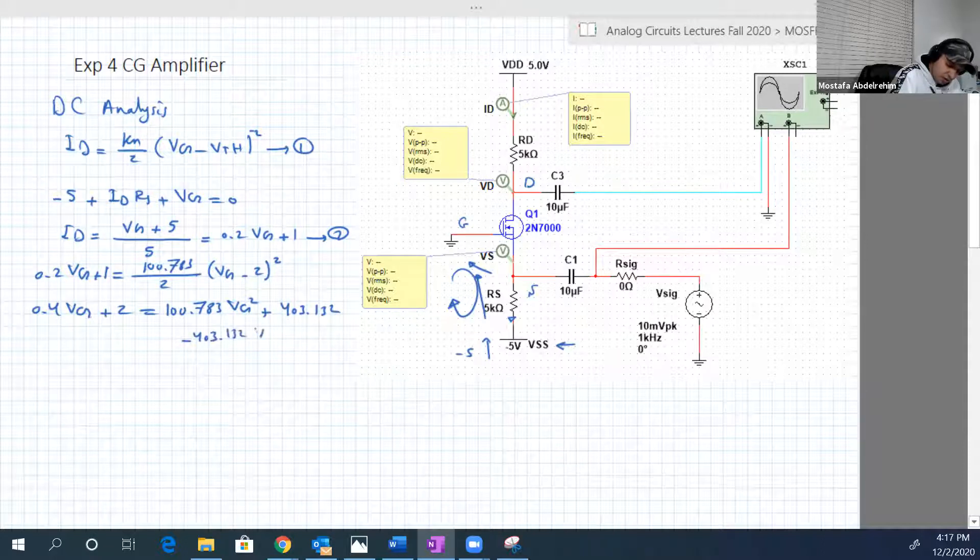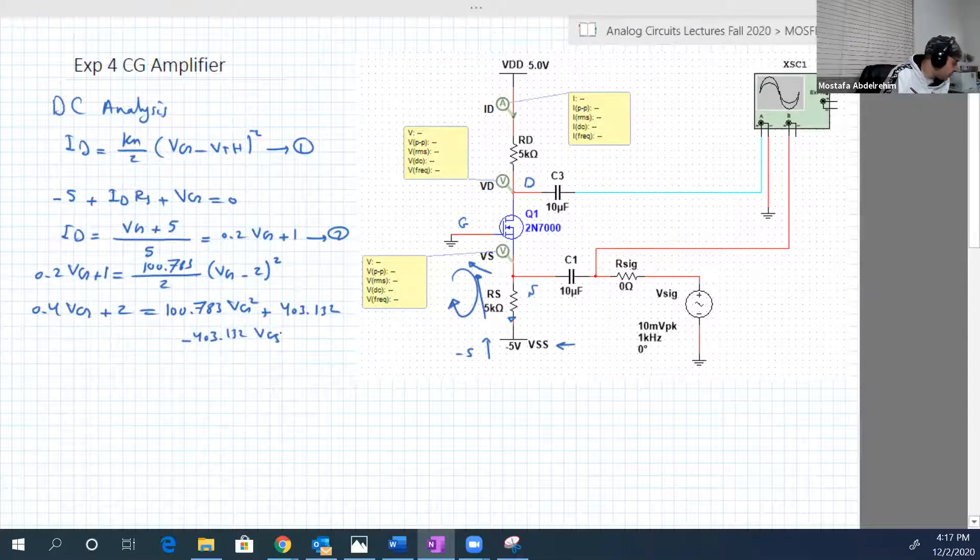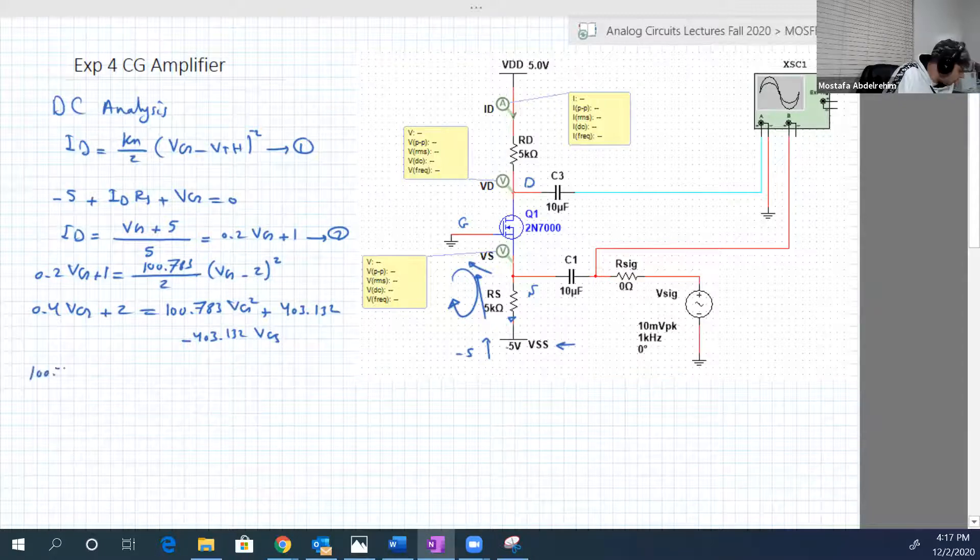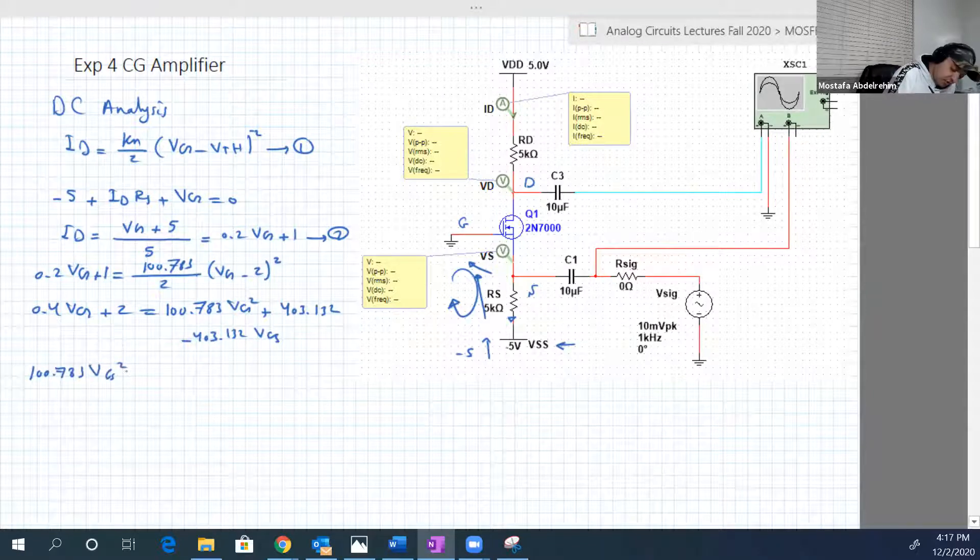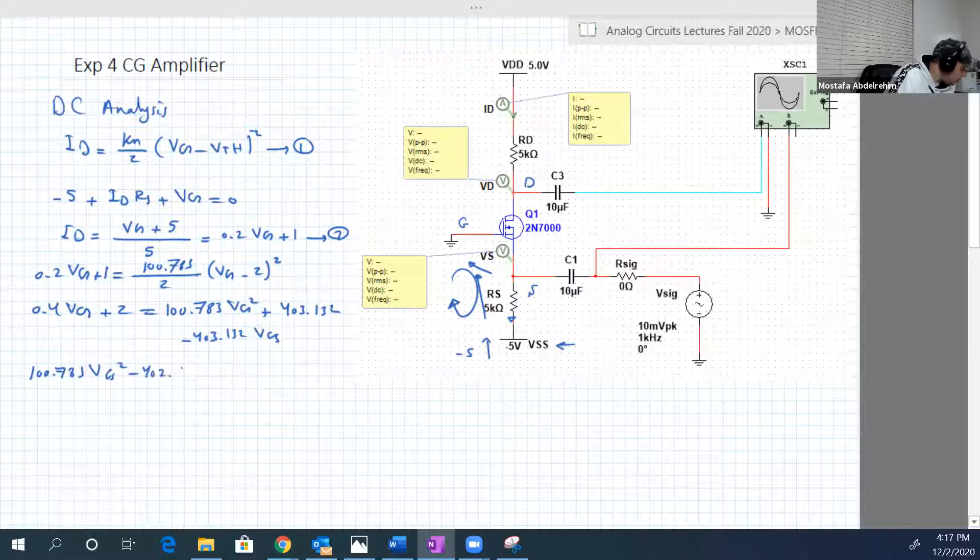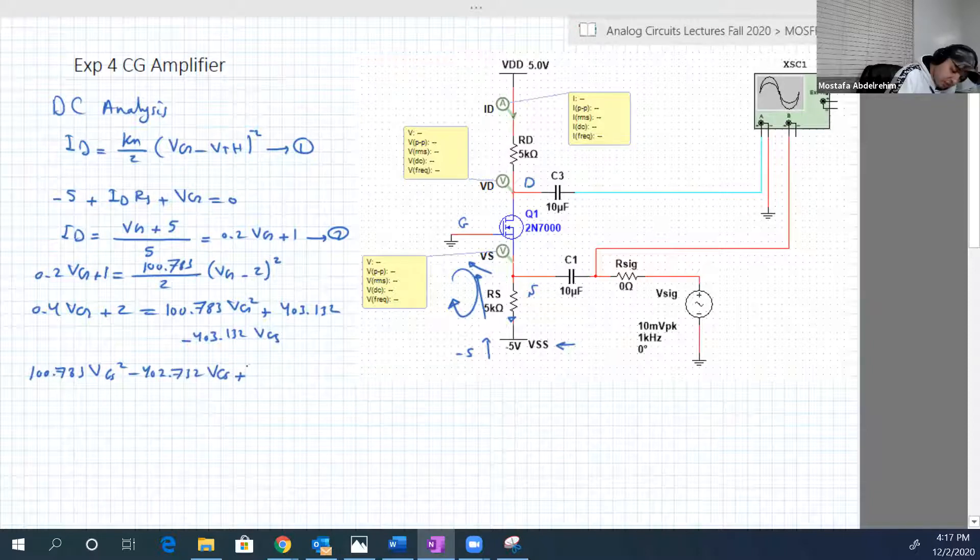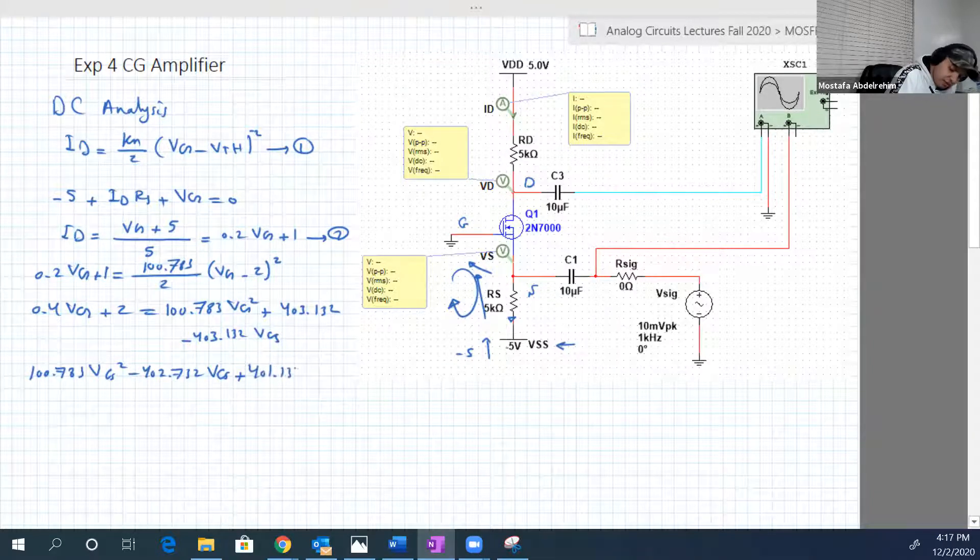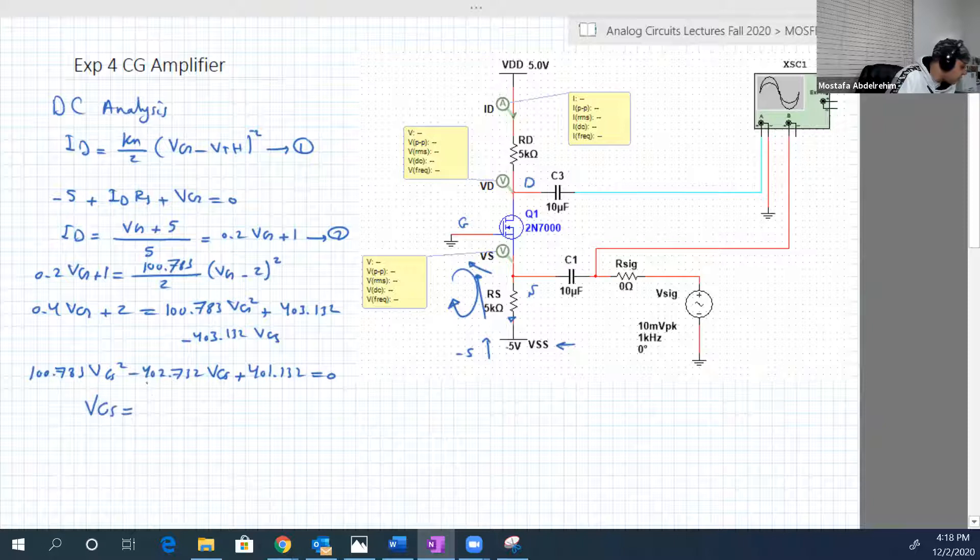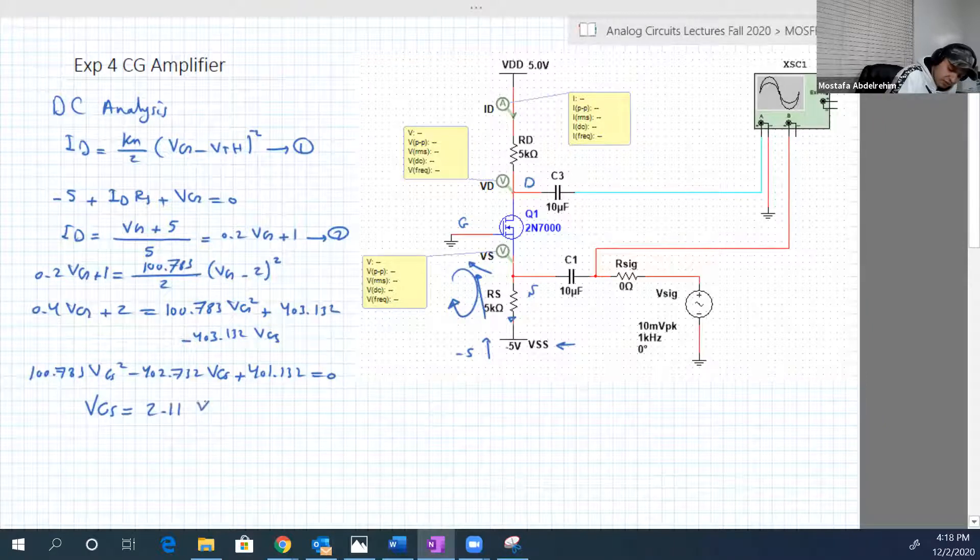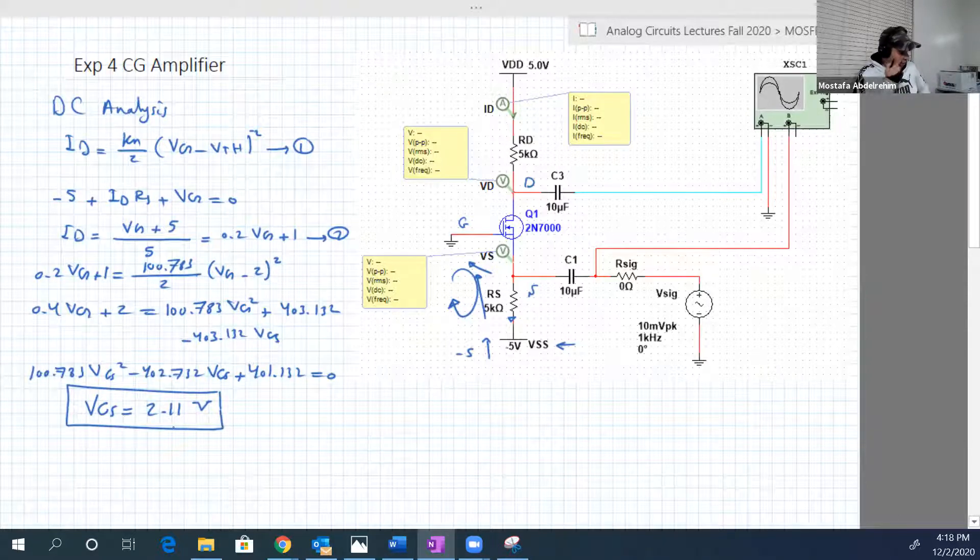Multiplying by 2: 0.4 VGS plus 2 equal to 1783 VGS squared plus 4 times 100, so 400.3132 minus 400.3132 VGS. The final equation would be 1783 VGS squared minus 402.732 VGS plus 401.132 equal to 0. By solving this equation, this will give us a valid solution which is VGS equal to 2.11 volts.